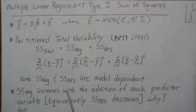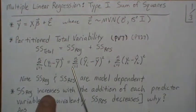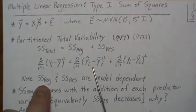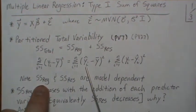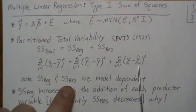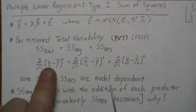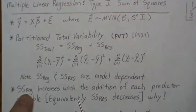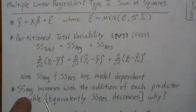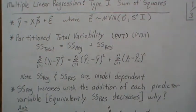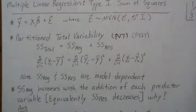And in scalar notation it's this. A couple notes: the regression sum of squares depends upon the model — on y-hat — and same for the residual sum of squares. The total sum of squares does not depend on the model. Now here's a note we'll justify in a second: the sum of squares regression increases with the addition of each predictor variable, or equivalently the sum of squares residual decreases. And the question is why?